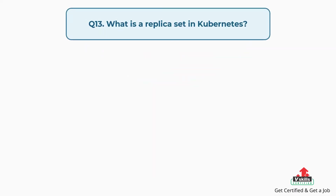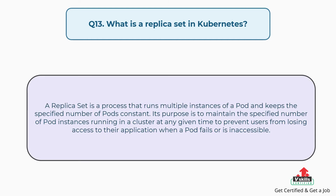Question number thirteen: What is a replica set in Kubernetes? A replica set is a process that runs multiple instances of a pod and keeps the specified number of pods constant. Its purpose is to maintain the specified number of pod instances running in a cluster at any given time, to prevent users from losing access to their application when a pod fails or is inaccessible.